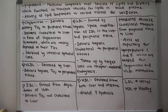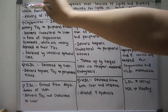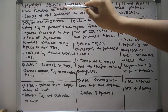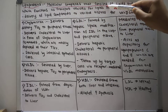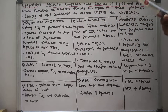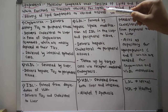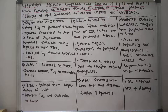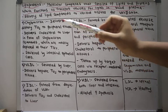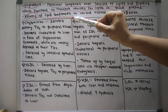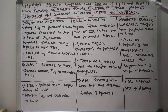In today's video we are going to talk about lipoproteins. Lipoproteins are molecular complexes that consist of lipids and proteins, which function as transport vehicles for lipids in blood plasma. They actually deliver the lipid components to various tissues for their utilization.